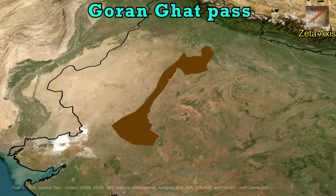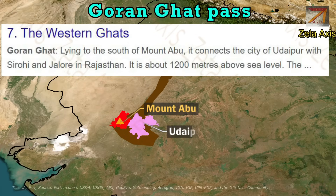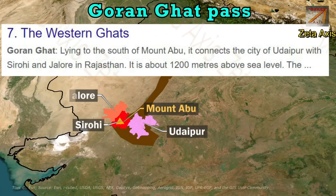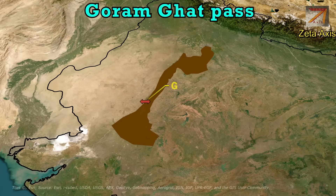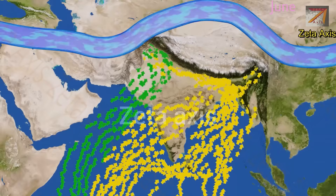Guram Ghat is another important pass of the Aravalli. It lies to the south of Mount Abu and connects the city of Udaipur with Sirohi and Jalor in Rajasthan. Guram Ghat Pass is located in Rajsamand district and connects the Mewar and Marwar regions of Rajasthan through the Aravalli hills. The Guram Ghat Pass also has a railway line passing through it.